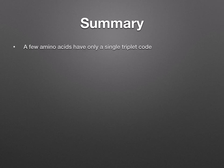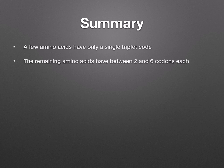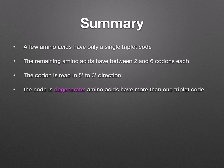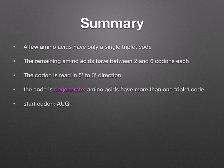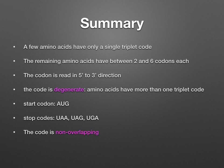What have we looked at in this lesson? A few amino acids have only a single triplet code. The remaining amino acids have between two and six codons each. The codon is read in a five prime to three prime direction. We say that the code is degenerate — amino acids have more than one triplet code. The start codon is AUG, which codes for methionine. The stop codes are UAA, UAG, and UGA. The code is non-overlapping and it's universal.